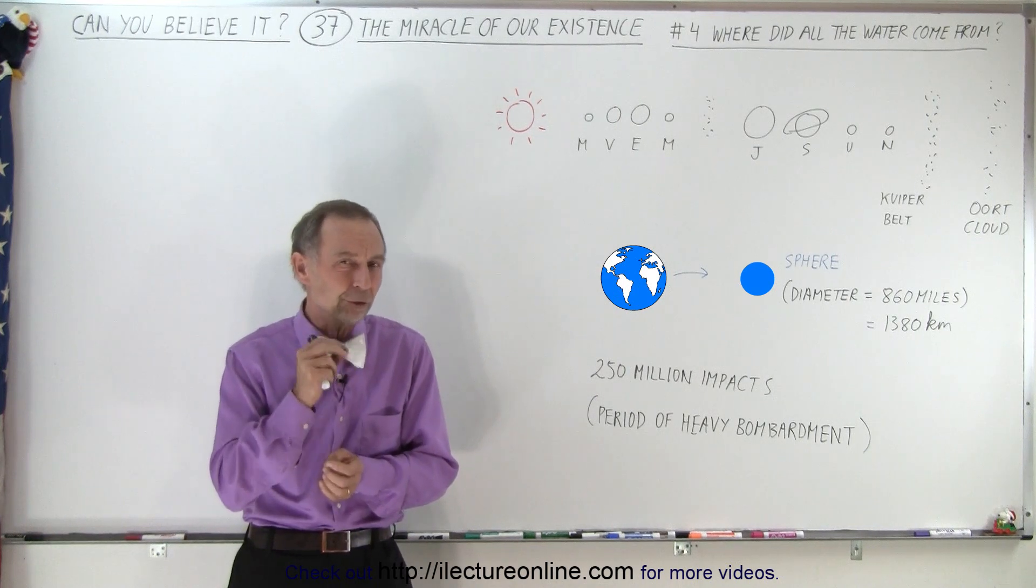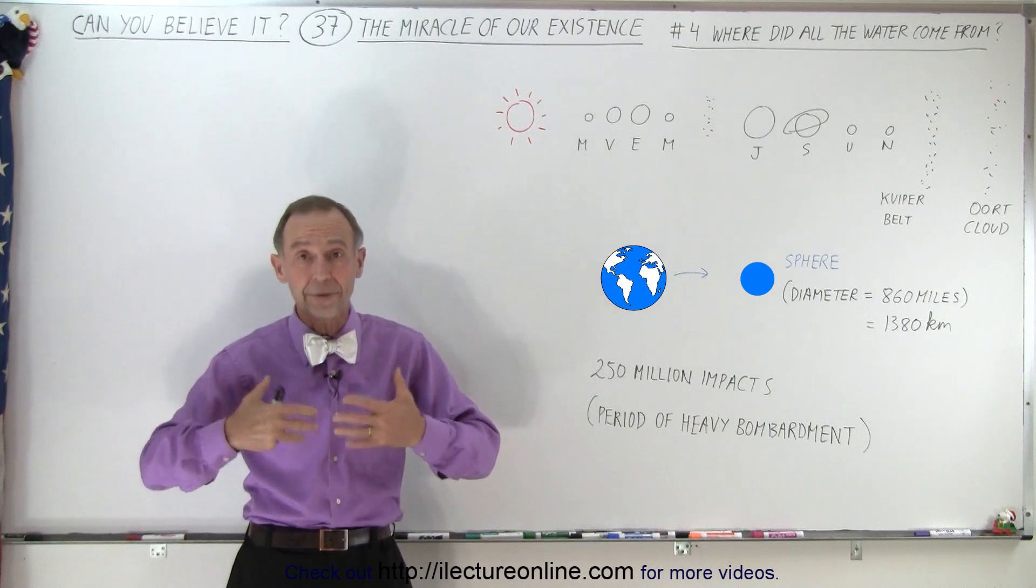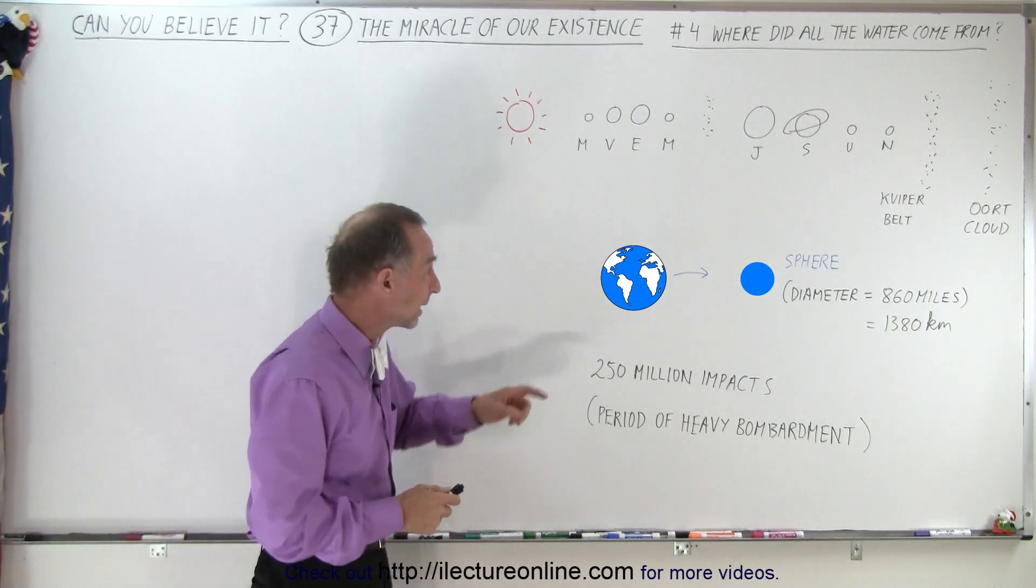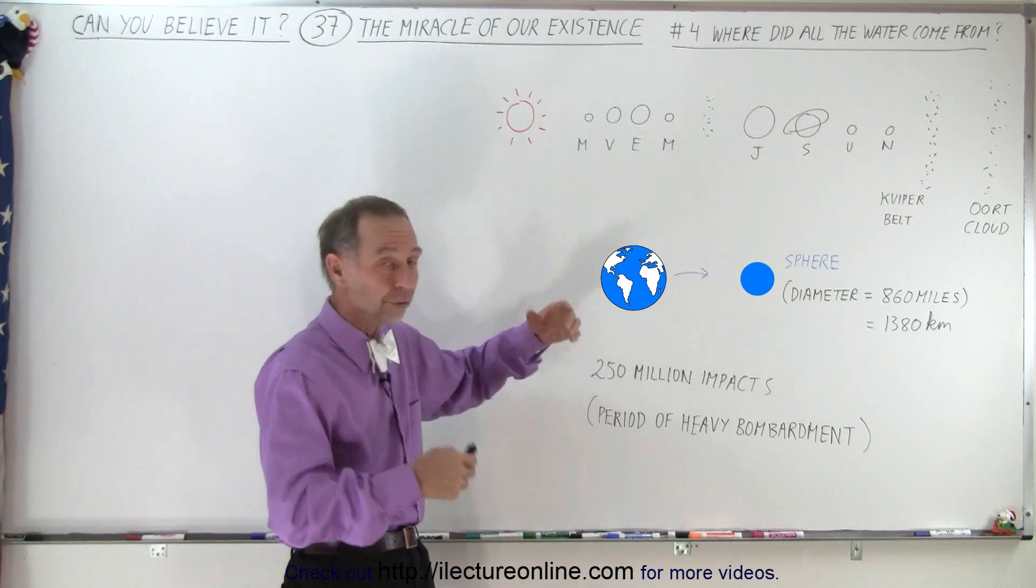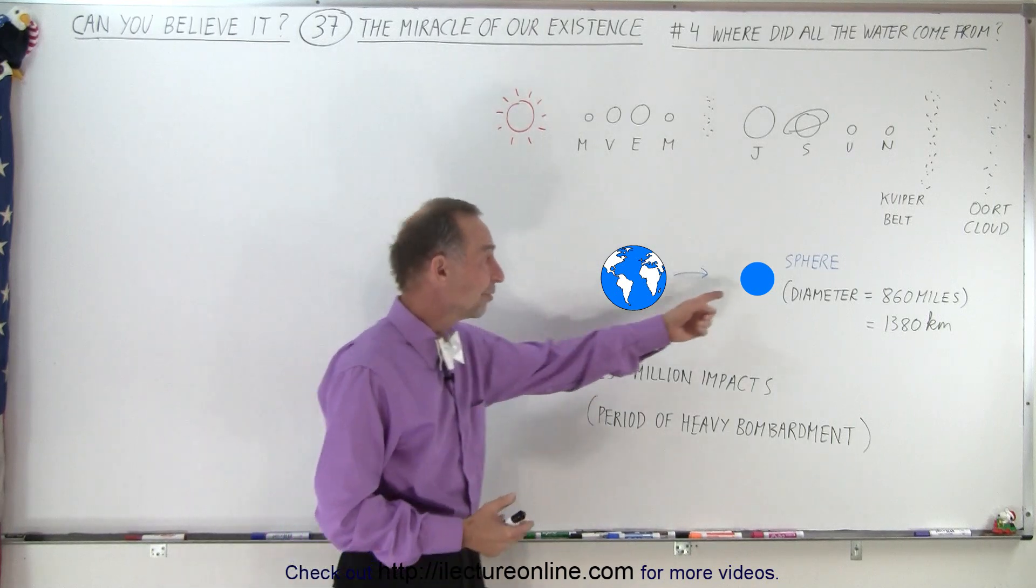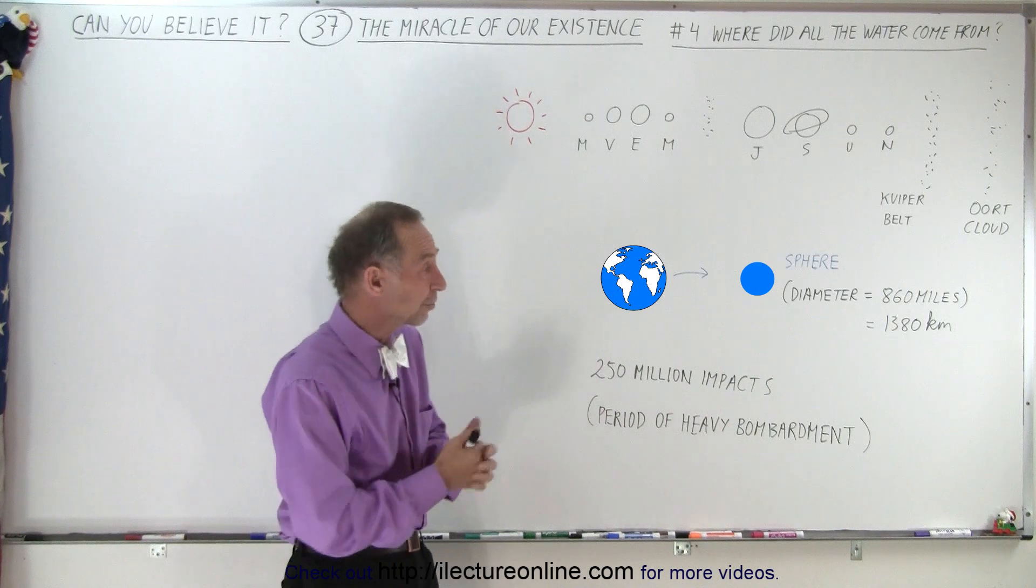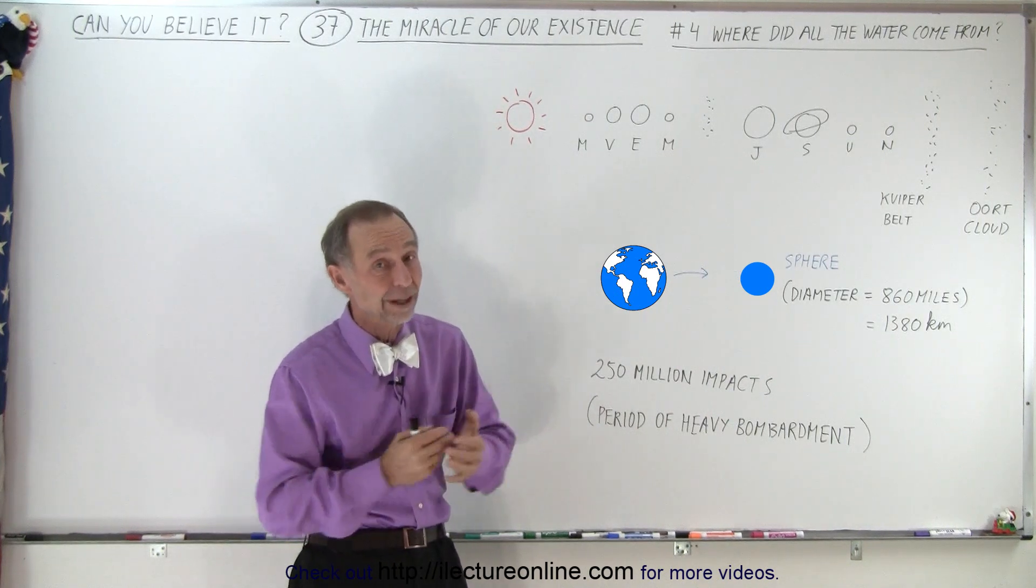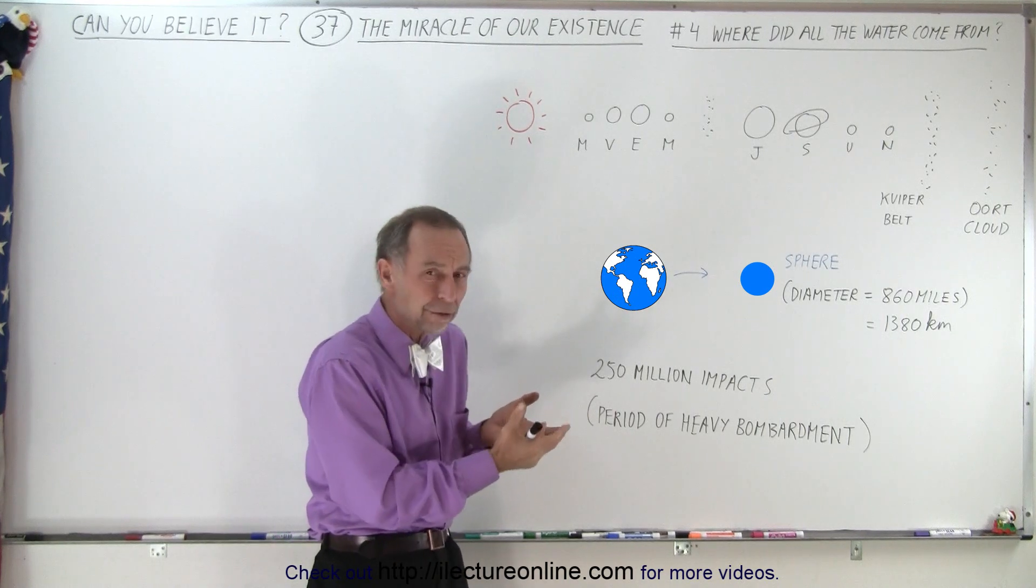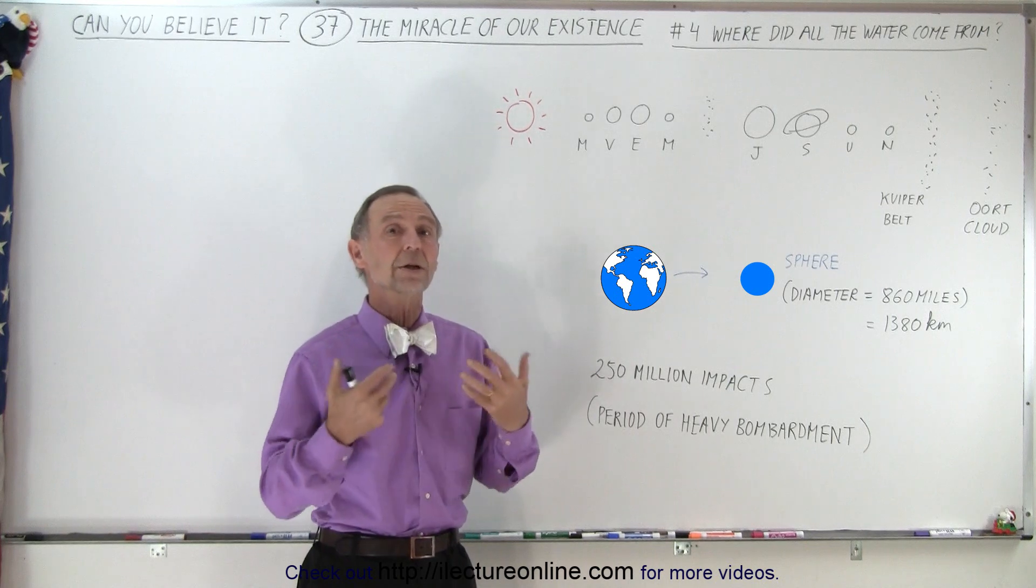But when the Earth was first formed four and a half billion years ago, there was virtually no water on the Earth. So where did it all come from? Because it turns out if we take all the water from all the oceans and all the rivers and the lakes and the ice in Antarctica, and we put it all together into a sphere, the diameter of that sphere would be 860 miles or 1380 kilometers. That is an enormous amount of water. So if the Earth didn't have any water four and a half billion years ago, or maybe just a small amount of it, where did it all come from?